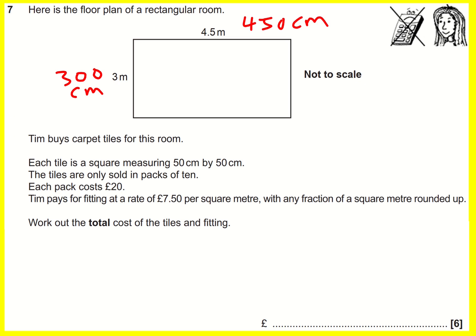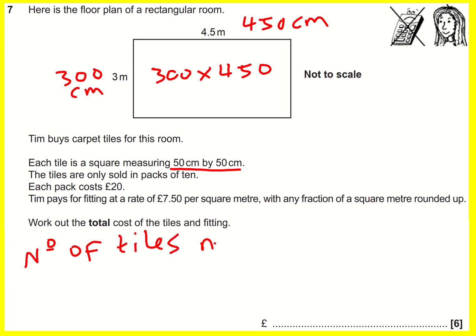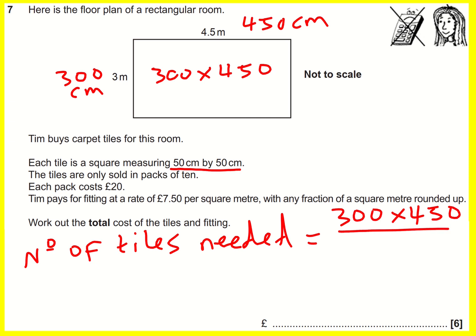So the total area is going to be 300 times 450. We want to know how many tiles we can fit into it, so the number of tiles needed equals the total area divided by the area of an individual tile. You could multiply the top and bottom and then do the division, but that's quite a lot of effort. Instead, we can just do 300 divided by 50 and cancel those bits out.